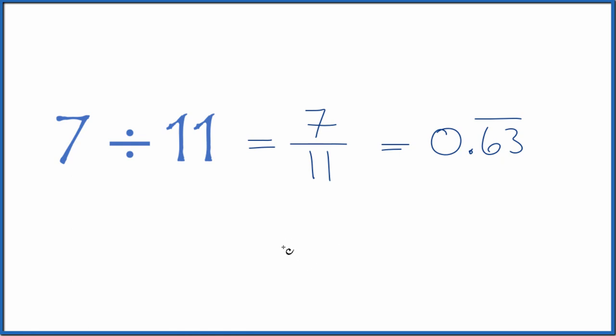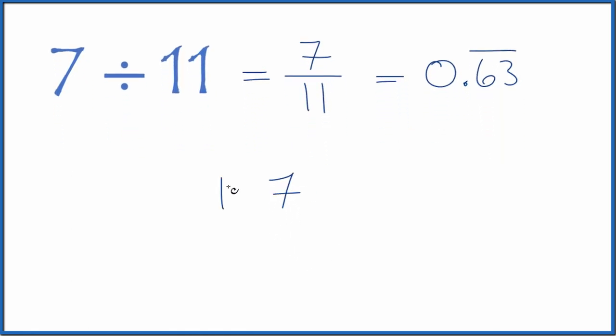You could also do this longhand. You could take 7, see how many times 11 goes into 7. 11 doesn't go into 7, but we could call this 70 and then put a 0 with a decimal point up here. So 6 times 11, that's 66, subtract that gives us 4.